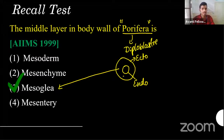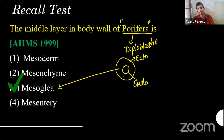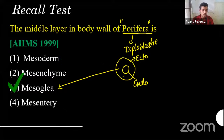Yes, mesoderm is present in Porifera, but it is in embryonic stage only. Nobody mentioned that clearly. Mesoderm means the middle layer — and we can directly use that term.